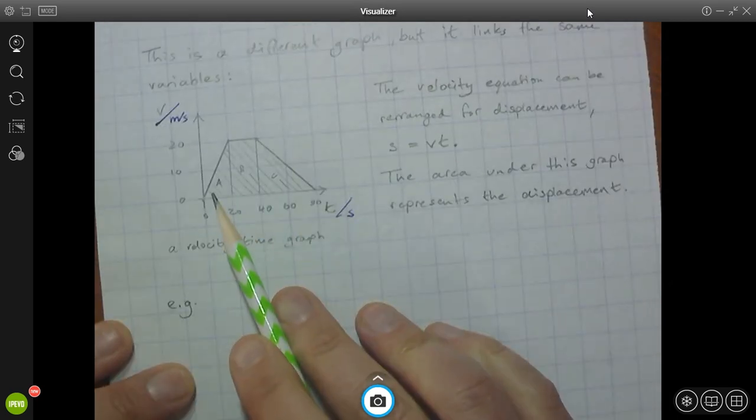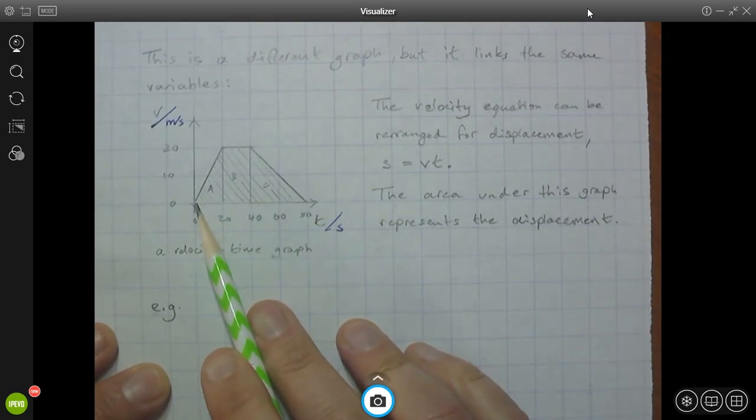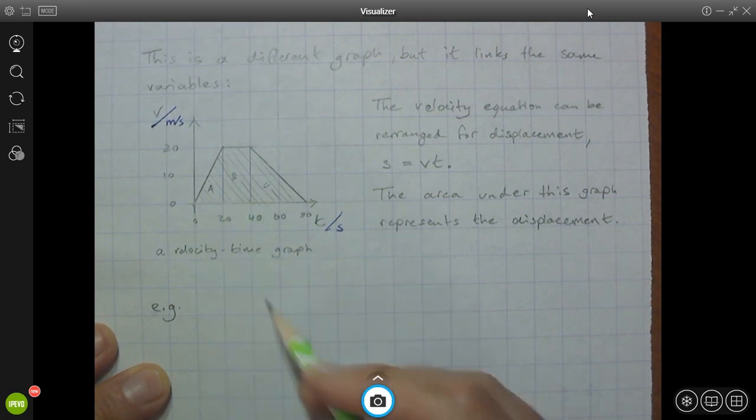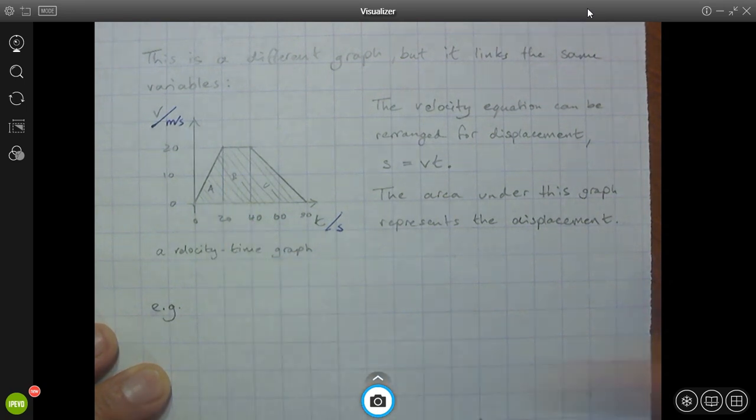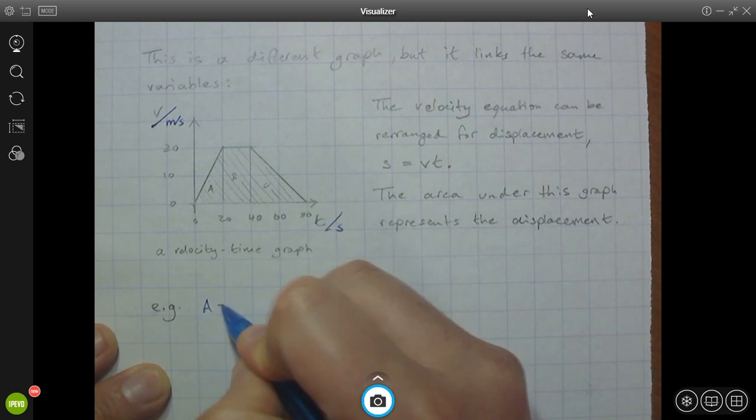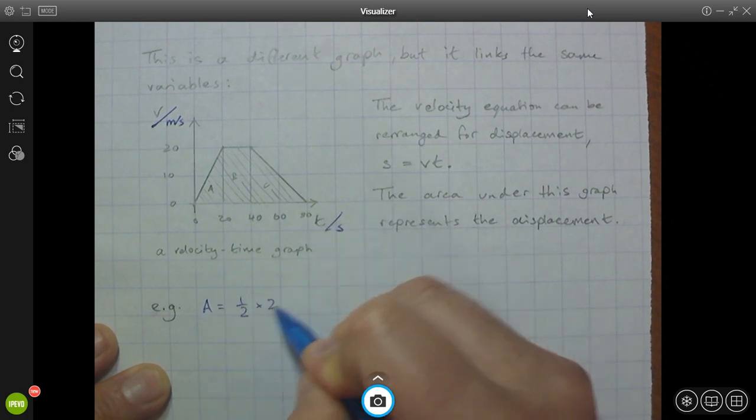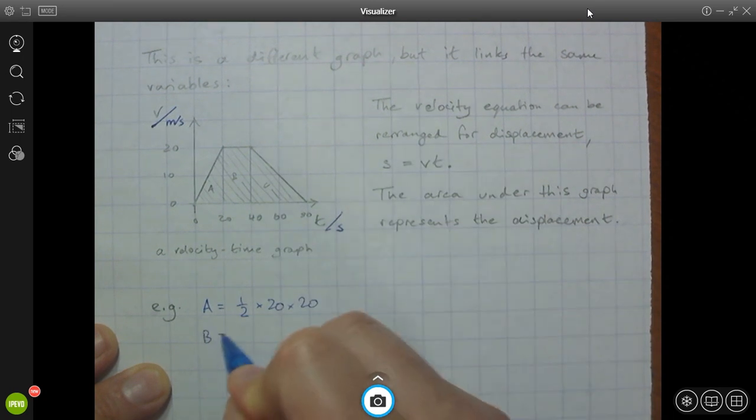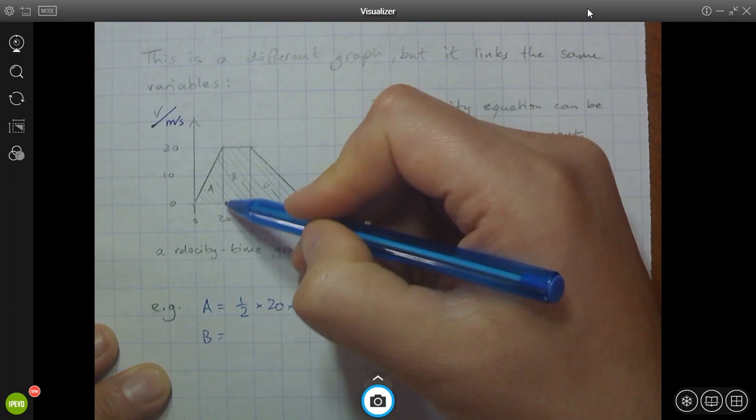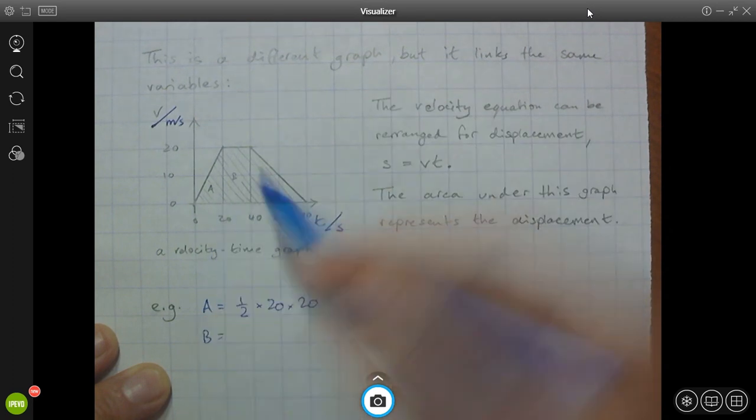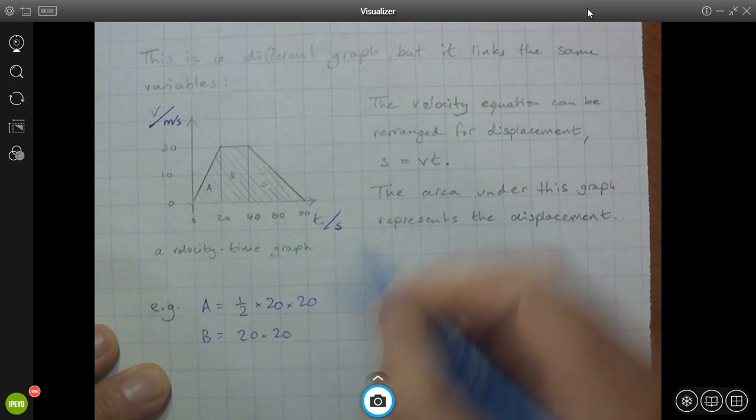So we're just going to use simple geometry. We're going to use what we know about the area of a triangle. A triangle is a half times the base times the height. So for area A, it's a half times 20 times 20. For area B, well, that's just a rectangle. That is the base, which is from 20 to 40. That's 20 times 20.